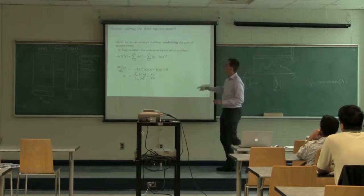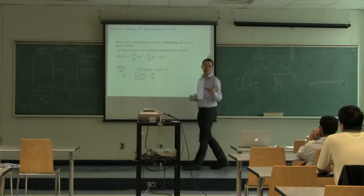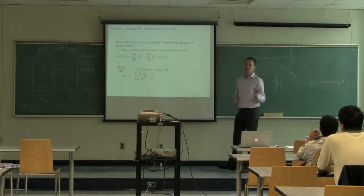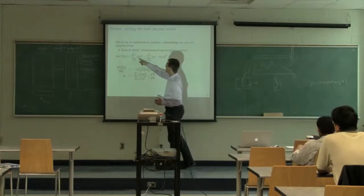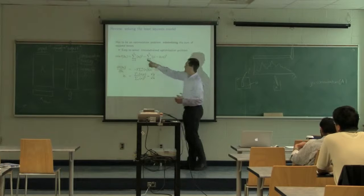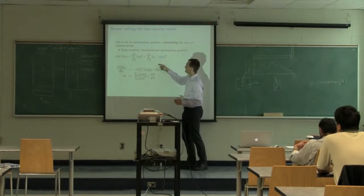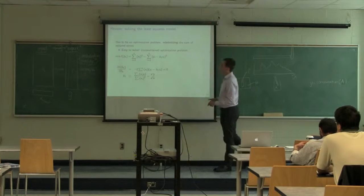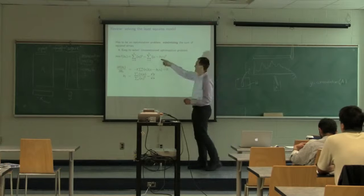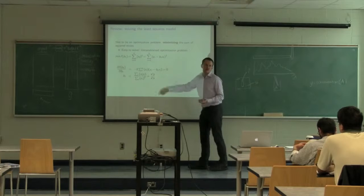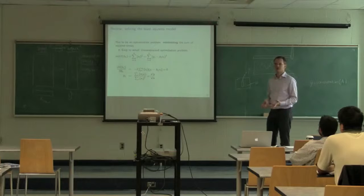It's much easier to do this derivation for least squares because we don't have any constraints — no Lagrange multipliers, no eigenvector decomposition. We just say minimize the sum of squares of residuals E, expand E as Y minus B1·X, take the square of that, take the partial derivative with respect to B1, set it to zero, and you get: B1 = X'Y / X'X.